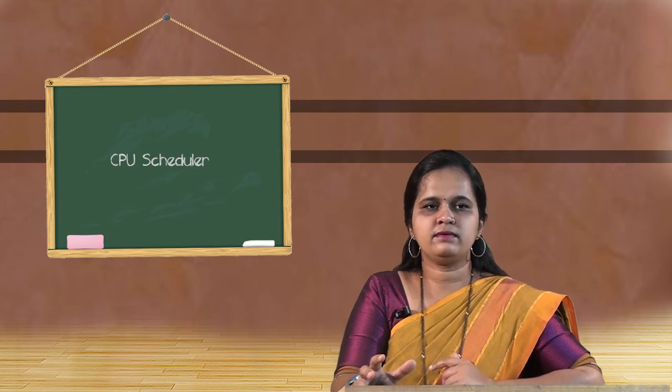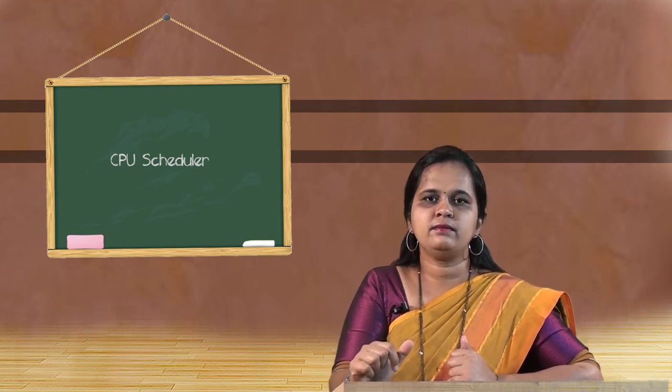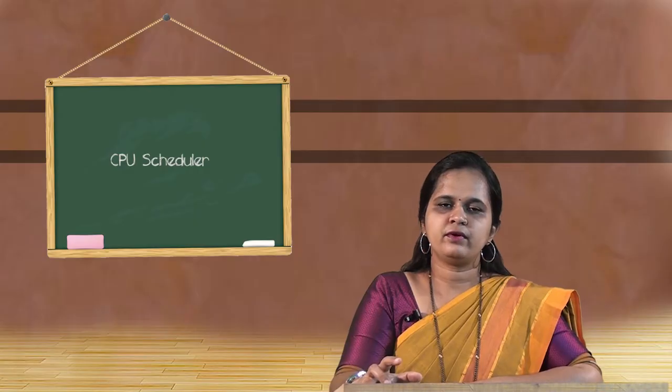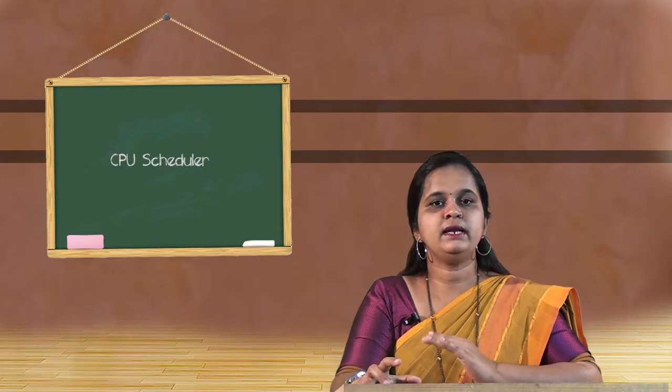All the other algorithms — that is, preemptive algorithms — work in steps 2 and 3, where when the process is executing and because some other process has come, this process has to stop its execution and go out of the CPU. Those situations we say the algorithm is preemptive. Therefore, the CPU scheduling algorithm works in two types: preemptive, which is stopping in the middle, and non-preemptive, which is continuing until the process gets its job done and reaches the terminate state.